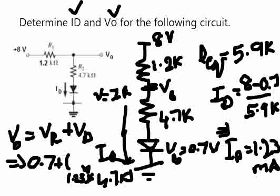Now if we calculate that, 1.23 into 4.7 which is nothing but 5.781. So 5.78 plus 0.7 which meant the voltage V naught is approximately 6.48 volts.